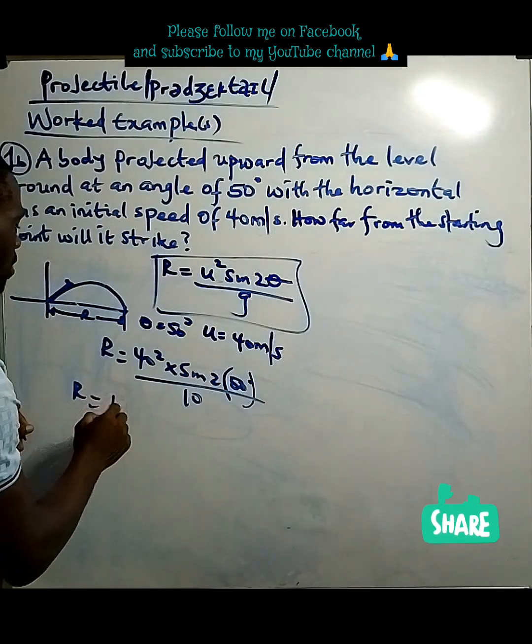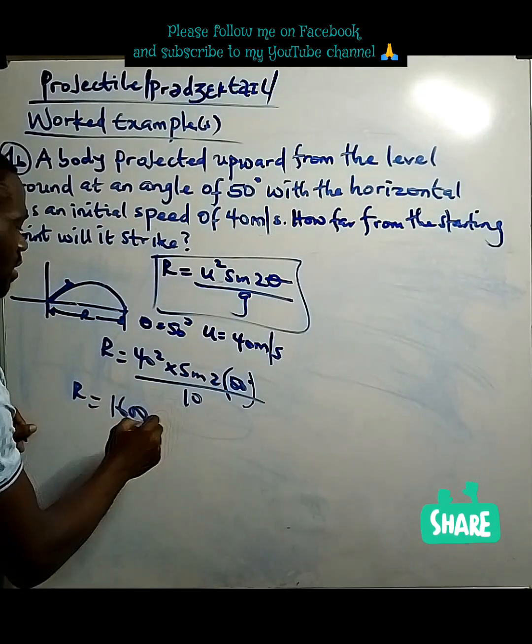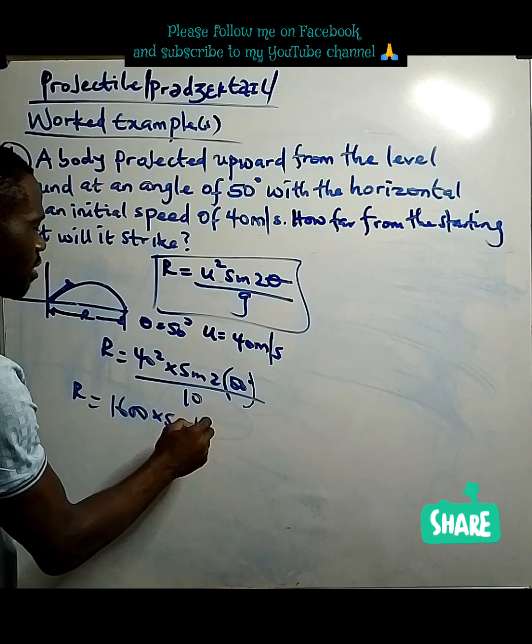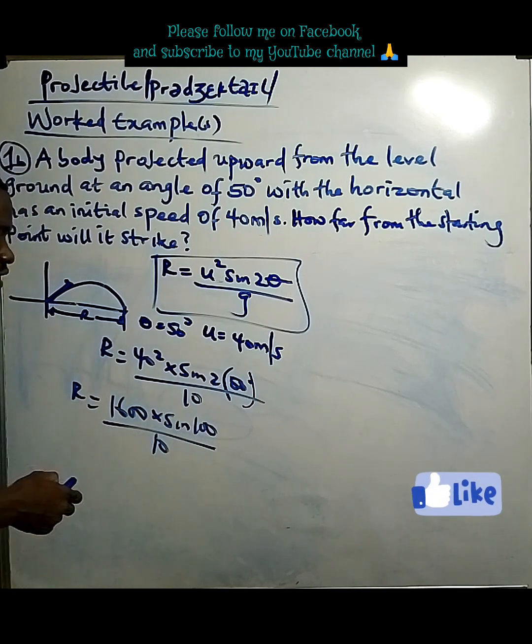So, what do we do? R is 1600 times sine 100 over 10. So, quickly, we're going to use our calculator.